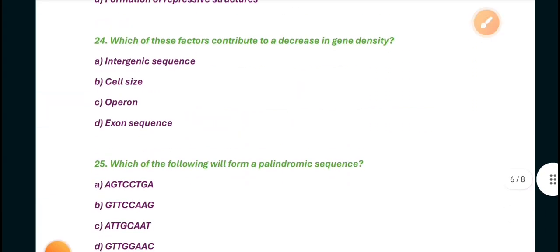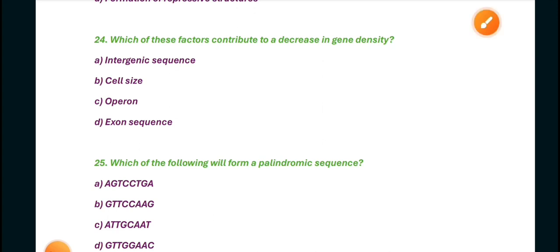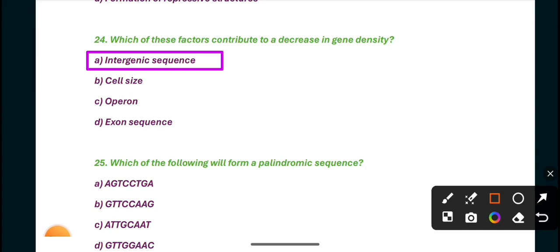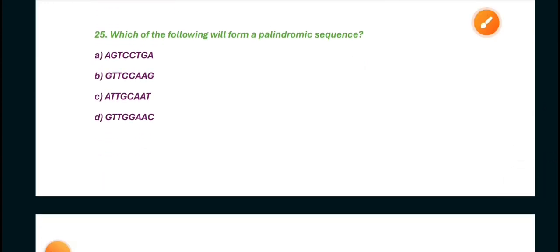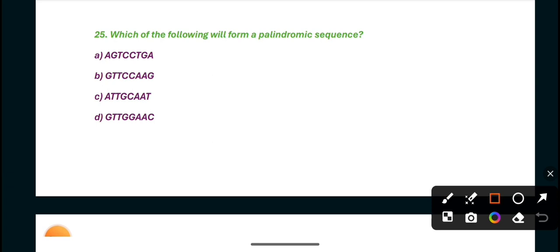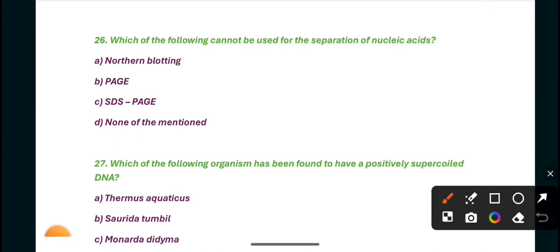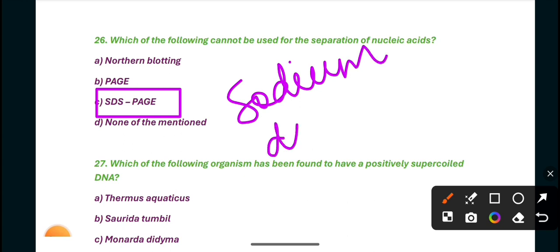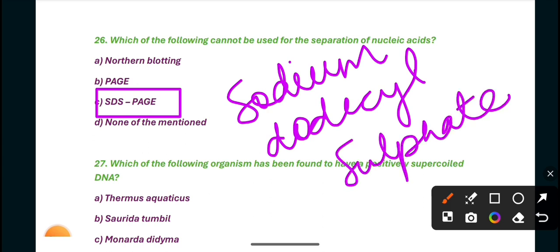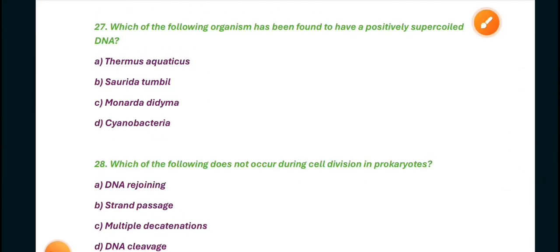Question 24: Which of these factors contributes to a decrease in gene density? Intergenic sequence is the right answer. Next, which of the following will form a palindromic sequence? Which of the following can be used for the suppression of nucleic acid? SDS patch is the right answer. The full form of SDS patch is sodium dodecyl sulfate. Next, which of the following organism has been found to have a positively supercoiled DNA? A is the right answer, Thermus aquaticus.